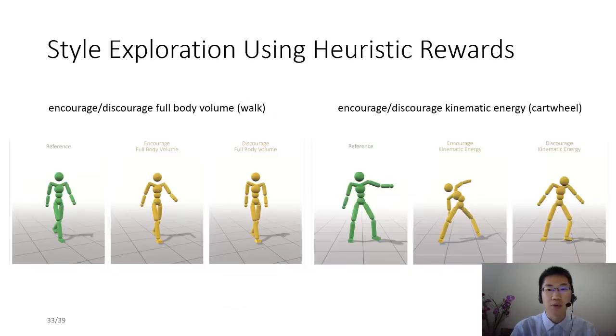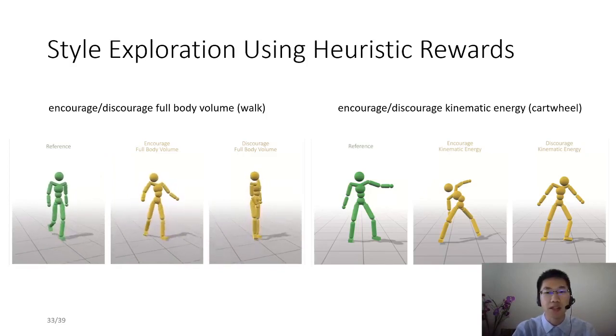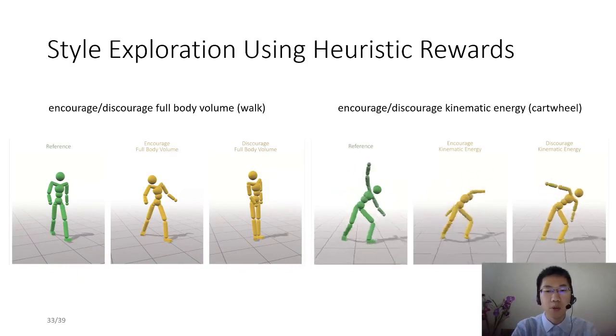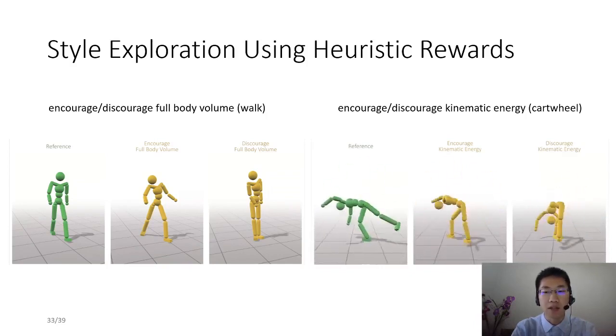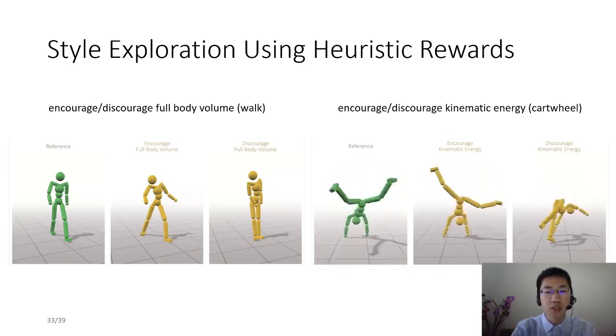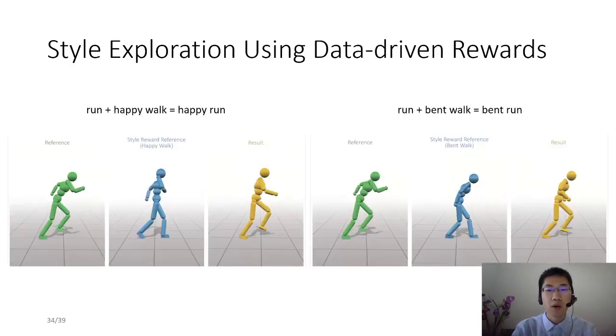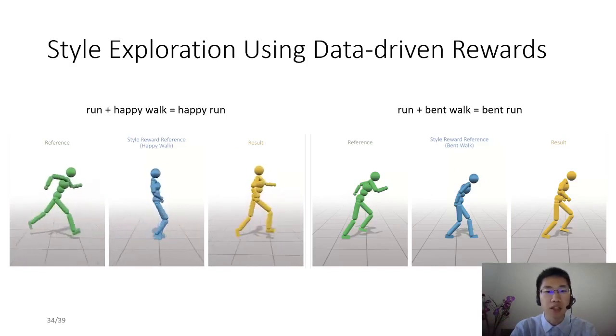Our framework supports style exploration when combined with style rewards. We first combine spacetime bounds with heuristic style rewards to generate stylized motions. In order to generate very different styles, we deliberately loosen the spacetime bounds. For example, we only bound the COM positions and root, ankle, and neck orientations for the cartwheel.